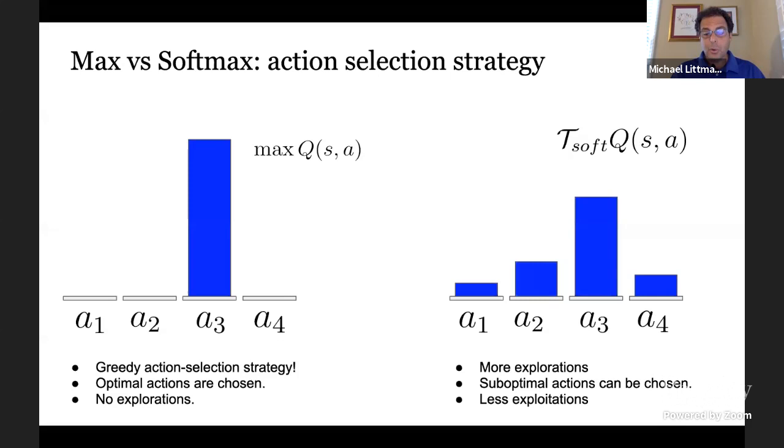Like maybe we'll take A3, which is the maximum action with higher probability, but we'll also take the other actions with some probability as well so we can find out more about how they work. So we're going to do more exploration. We're going to take suboptimal actions or what we believe to be suboptimal actions some of the time, which means we're exploiting less relative to our state of knowledge. But as we're learning over time, we're going to be improving our understanding of the environment and hopefully getting more reward, having a better estimate of what those values actually are.